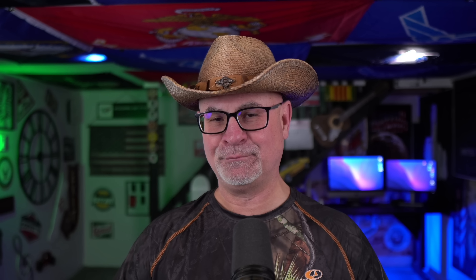What is fatty liver disease? The liver is the largest organ in the body. It aids in digestion, energy storage, and removal of toxins. Fatty liver disease is a condition in which fat builds up in the liver. There are two major types of fatty liver disease. They're both rated on the same diagnostic code, which I'll get to in a minute: non-alcoholic fatty liver disease and alcoholic fatty liver disease.